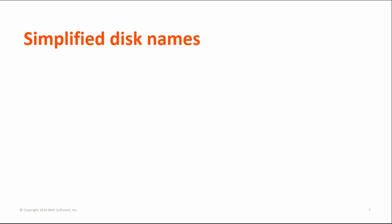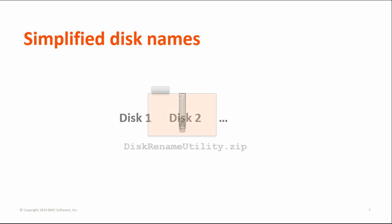Virtual machine disks now have display names of disk 1, disk 2, and so on according to the order in which the disks were provisioned. This provides a simpler and clearer view of the disks in the BMC Cloud Lifecycle Management user interface. If you want existing disks to benefit from the change in naming, run diskrenameutility.zip after installation. For more information, see the BMC documentation.